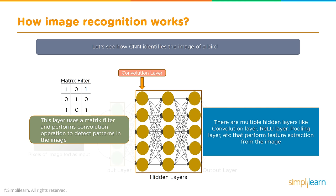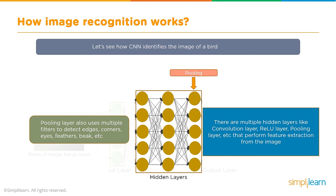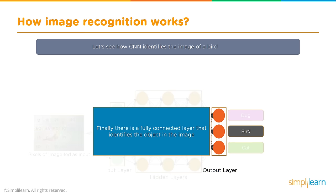There are multiple hidden layers: the convolution layer, the ReLU layer — which stands for Rectified Linear Unit and relates to the activation function — and the pooling layer, which uses multiple filters to detect edges, corners, eyes, feathers, beak, etc. Pooling is pooling information together. Finally, there is a fully connected layer that identifies the object in the image. These different layers come through and converge to the final area where one neural network entity lights up and says 'it's a bird.'